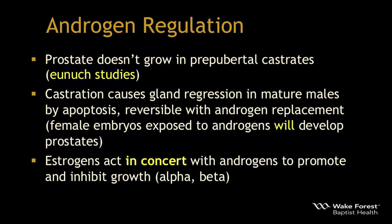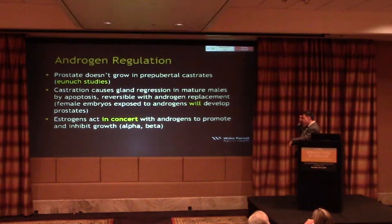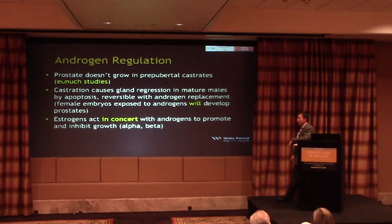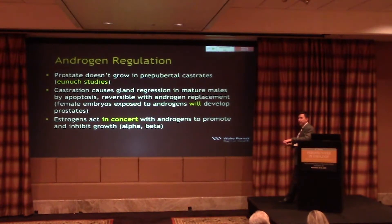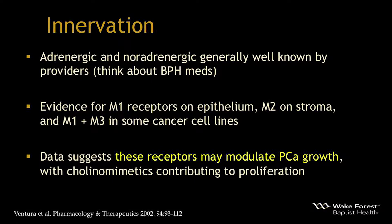It has also been shown that exposing female embryos to androgens will cause them to develop prostates. Estrogens act in concert with androgens to promote and inhibit growth — there is an estrogen alpha receptor and an estrogen beta receptor, concentrated in different areas of the prostate with apparently different functions. Regarding innervation, there are adrenergic and noradrenergic receptors within the prostate. While alpha blockers are well known, recent research shows that norepinephrine can accelerate metastasis of prostate cancer in an animal model, suggesting stress reduction may be beneficial for cancer patients.